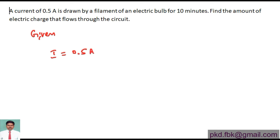The time for which the current flows will be equal to 10 minutes, and I'm going to convert this 10 minutes into seconds. Using the formula 1 minute equals 60 seconds, so 10 minutes can be written as 10 into 1 minute, which equals 10 into 60 seconds, giving us 600 seconds.